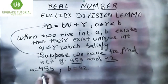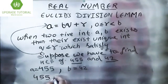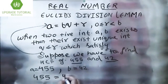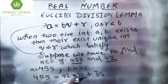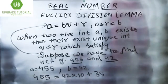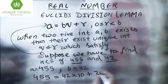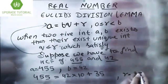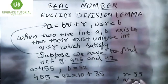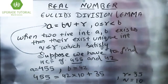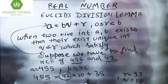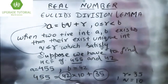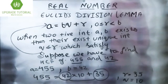So 455 = 42 × 10 + 35. When we compare this with the equation, we get r = 35 and q = 10. Now we consider this term — among 42 and 35, which one is largest? 42 is largest.